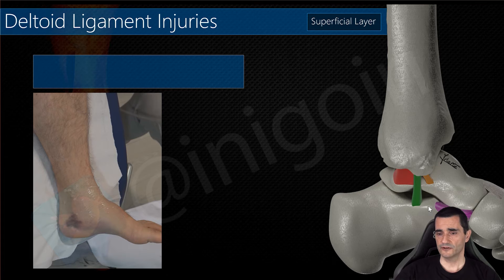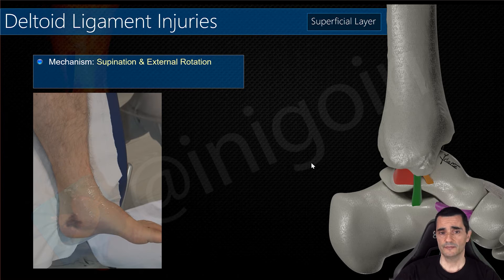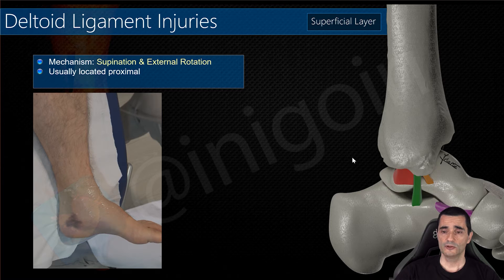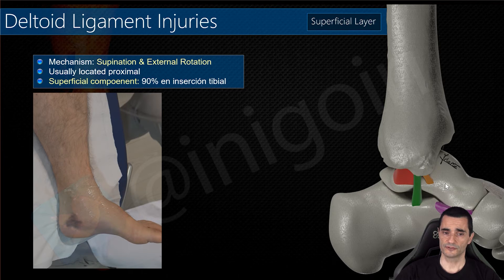In the superficial layer, we begin with the tibio-calcaneal ligament, which runs between the tibia and the sustentaculum tali. This superficial layer is usually affected in a mechanism of supination and external rotation. The injury location is usually proximal — 90% of affections of the superficial layer take place at its tibial insertion, so always check this area.